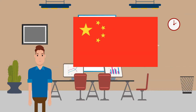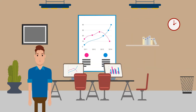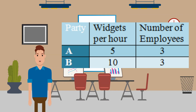Imagine economy A produces five widgets per hour with three workers, while economy B produces ten widgets per hour with three workers. Assuming workers are paid equally, economy B has an absolute advantage over economy A in producing widgets — it can produce twice as many with the same number of workers. In the table, party B has an absolute advantage in producing widgets: more widgets with the same amount of resources.